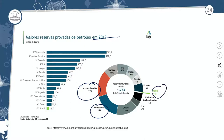Os grandes produtores e as grandes reservas a gente encontra principalmente na Arábia Saudita e na Venezuela. O total de reservas mundiais chega a quase 2 bilhões de barris quando a gente fala do total dessas reservas espalhadas pelo mundo.